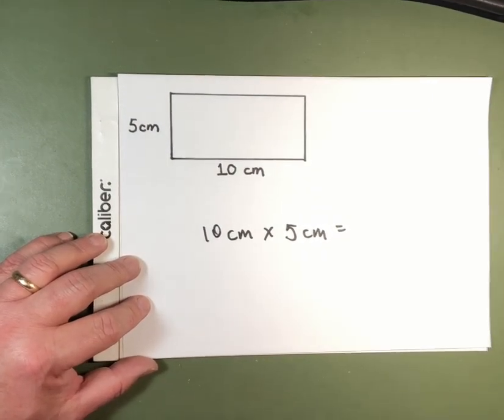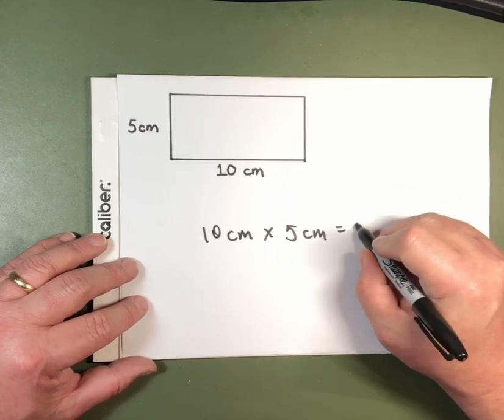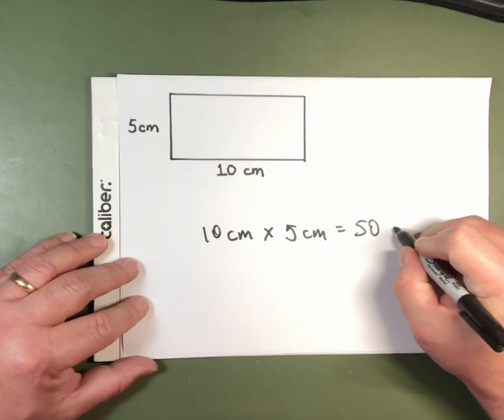And so we multiply length times width, and that's five centimeters times 10 centimeters. And we get an area of 50 square centimeters.